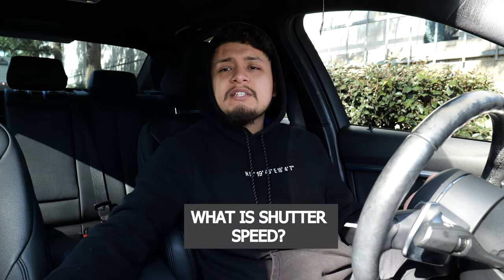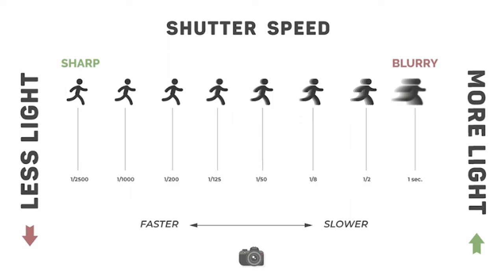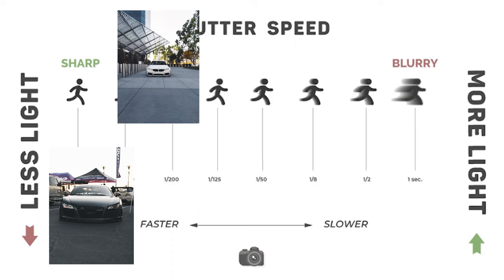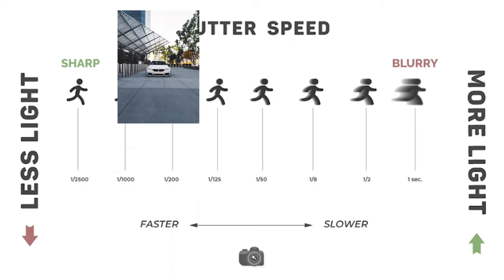We're going to start off with shutter speed. So what is shutter speed? Shutter speed is the amount of time your digital sensor within the actual camera is exposed to light. A faster shutter speed will allow you to capture sharp images. However, it'll decrease the amount of light you are letting into your camera.